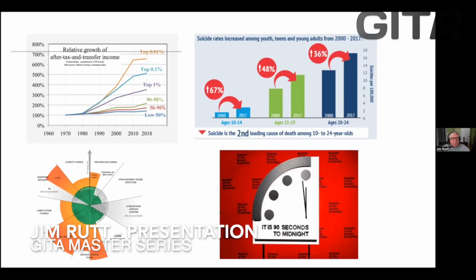This is our nine planetary boundaries. We're already over seven of them with unknown consequences. This is from the Bulletin of Atomic Scientists, their famous doomsday clock. They've now set it to 90 seconds before midnight, which is the closest to midnight it's ever been.